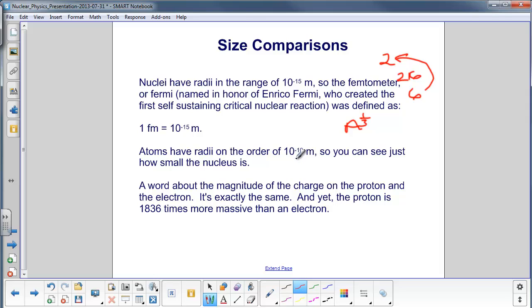Atoms have radii on the order of 10 to the minus 10th meters, five orders of magnitude larger. So you can see how tiny the nucleus really is.